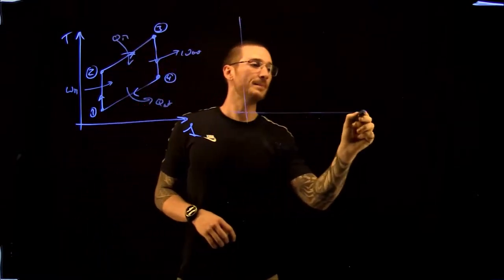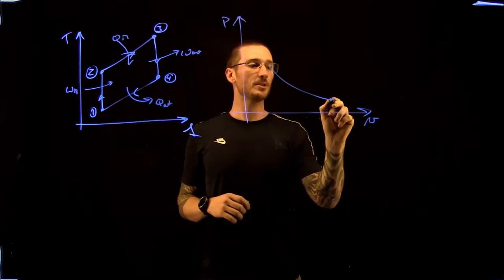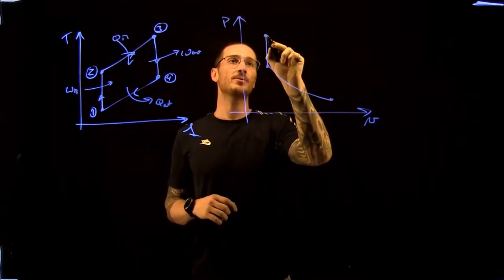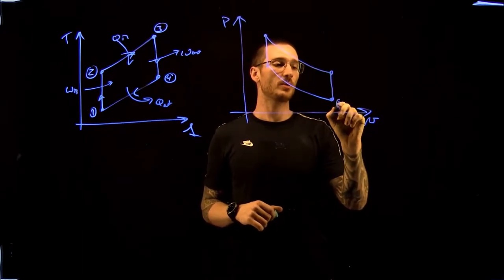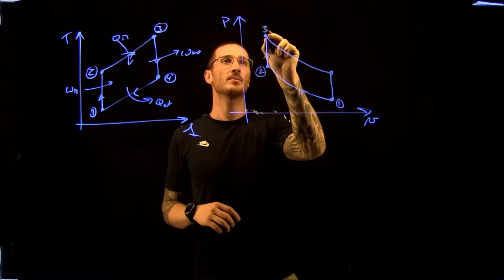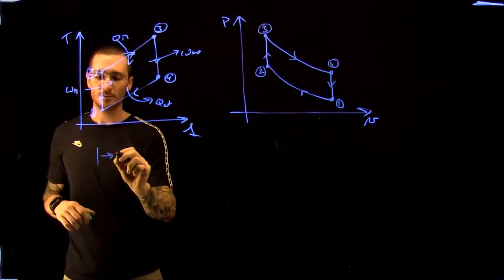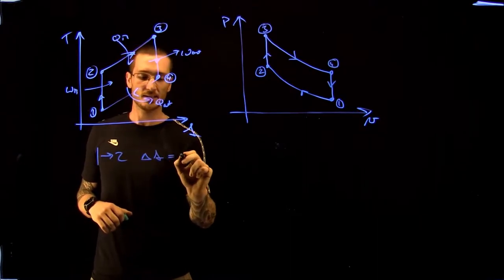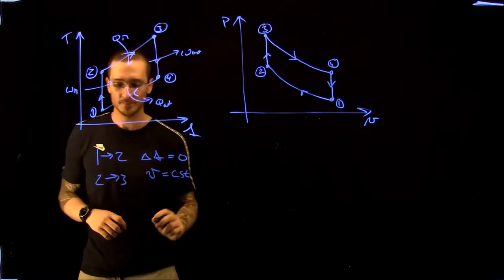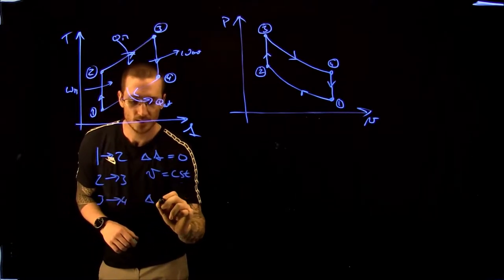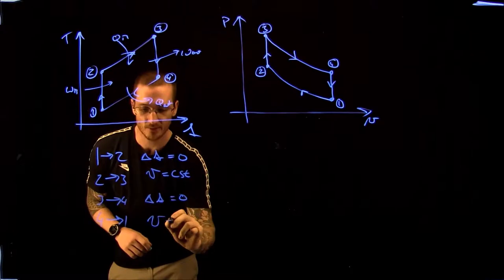On our PV diagram, we have compression from state 1 to 2, then constant volume heat addition from 2 to 3, expansion from 3 to 4, and constant volume heat removal from 4 back to 1. From 1 to 2, delta S equals zero (isentropic). From 2 to 3, specific volume is constant. From 3 to 4, delta S equals zero (isentropic). From 4 to 1, specific volume is constant.